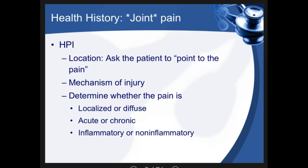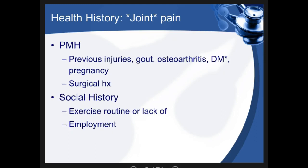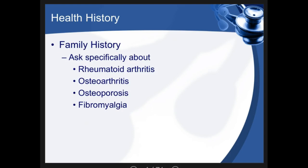If there was an injury involved, ask about the mechanism of injury. Past medical history significant for musculoskeletal or joint pain includes previous injuries, gout, osteoarthritis, and diabetes — which can cause joint softening, particularly Charcot joint in the foot where the joints soften and collapse. Pregnancy can also cause joint pain. For social history, ask about exercise routine, lack thereof, and employment. Family history should include rheumatoid arthritis, osteoarthritis, osteoporosis, and fibromyalgia.